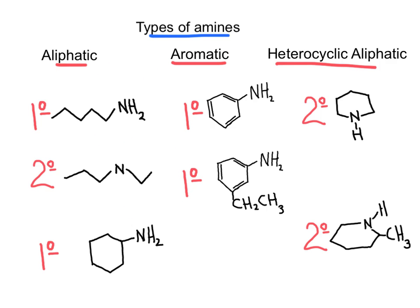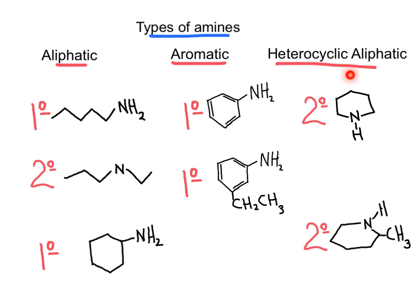Amines can be classified as primary, secondary, or tertiary, but they can also be classified as aliphatic or aromatic. In an aliphatic amine, the carbon directly bonded to the nitrogen is an alkyl group. In an aromatic amine, at least one aromatic benzene ring is bonded to the nitrogen.